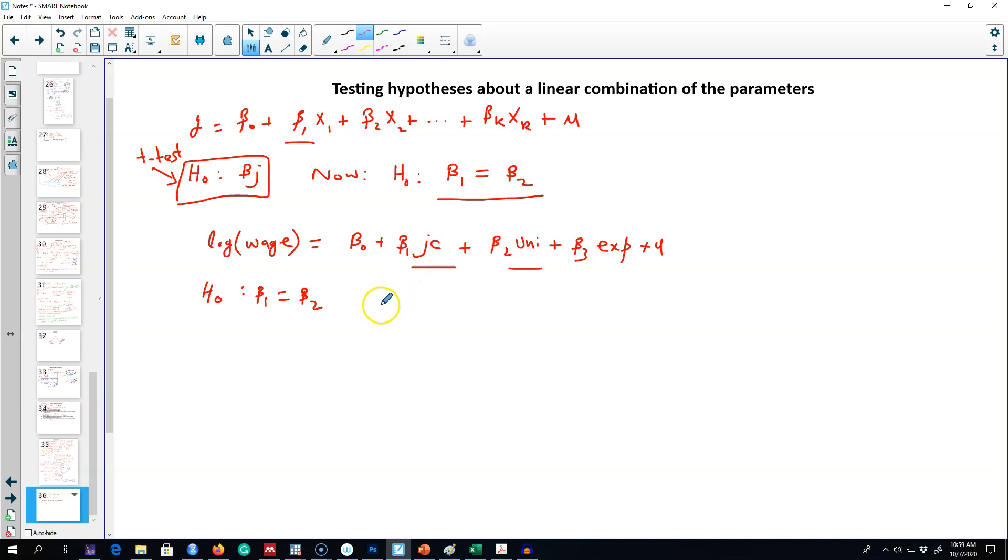Our alternative hypothesis would be that junior college marginal return is less than the return to education from a university. It will be tempting to use a simple t-test of this form.